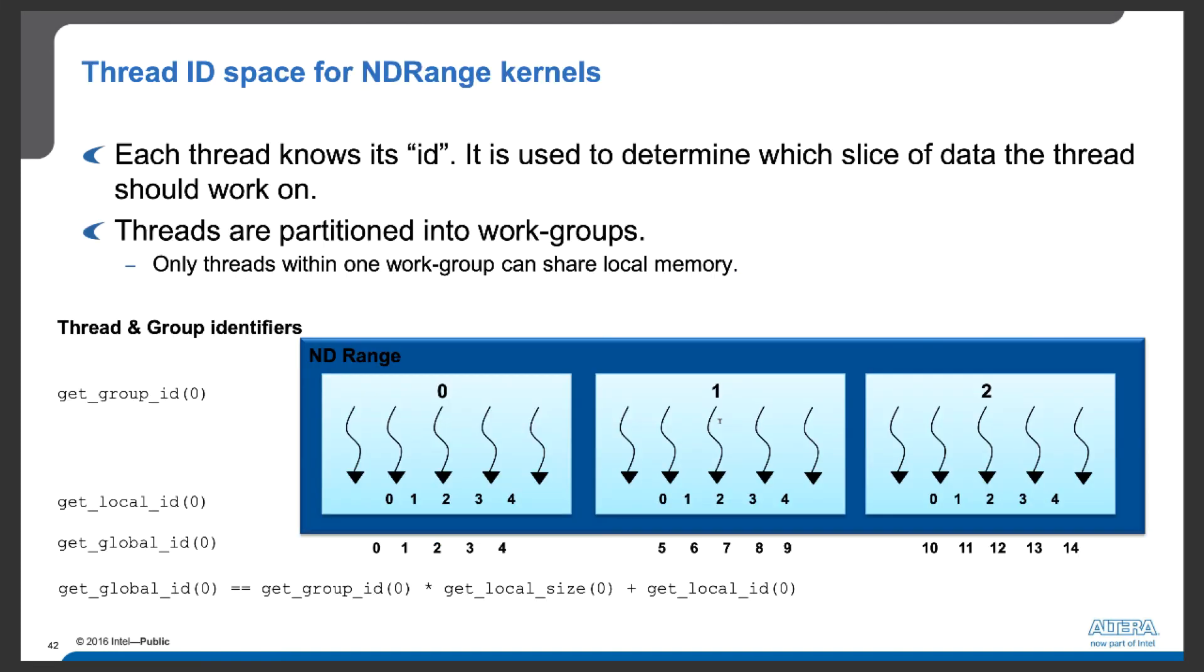We see from the previous example that each kernel function or each thread knows its identifier. And it is used to determine which slices of data the thread or kernel function should work on.